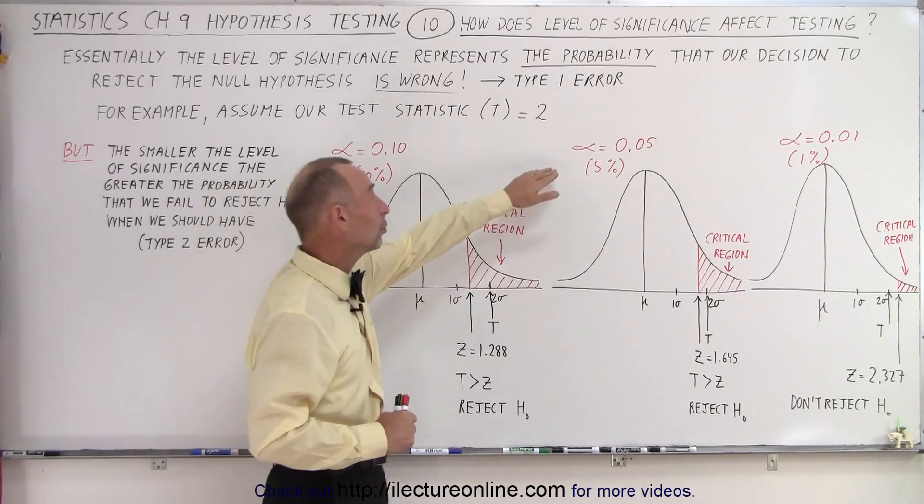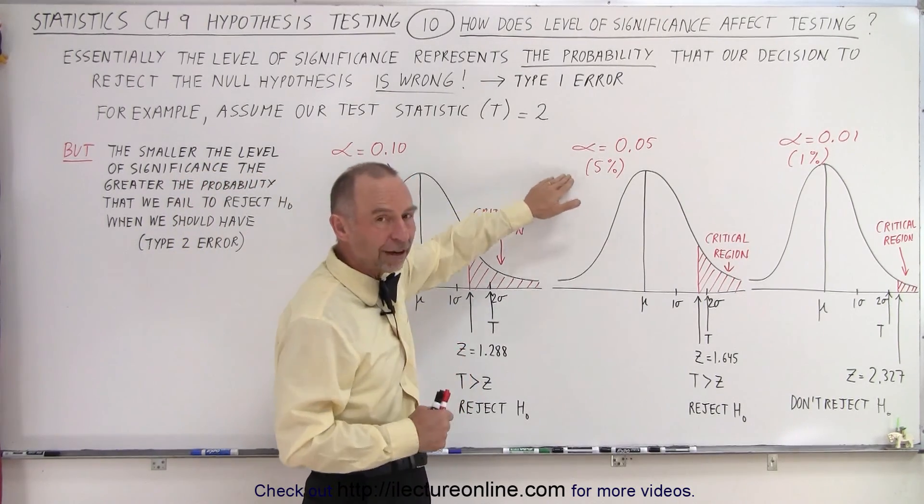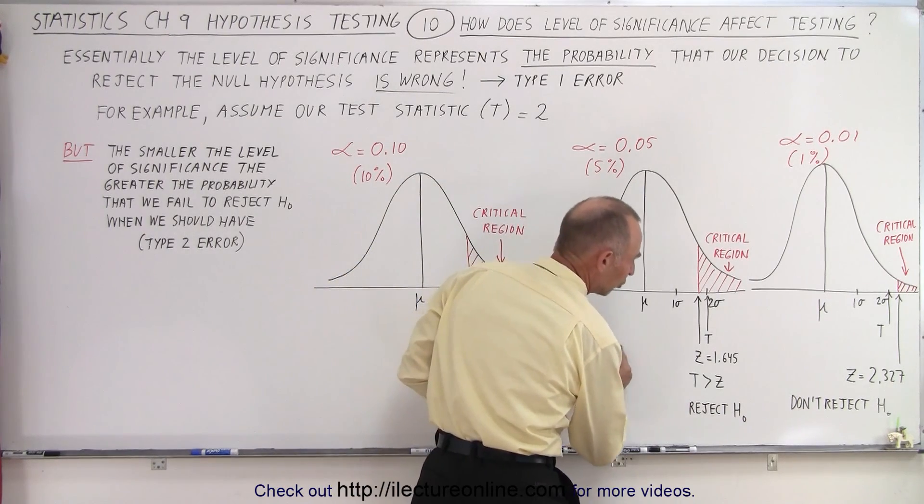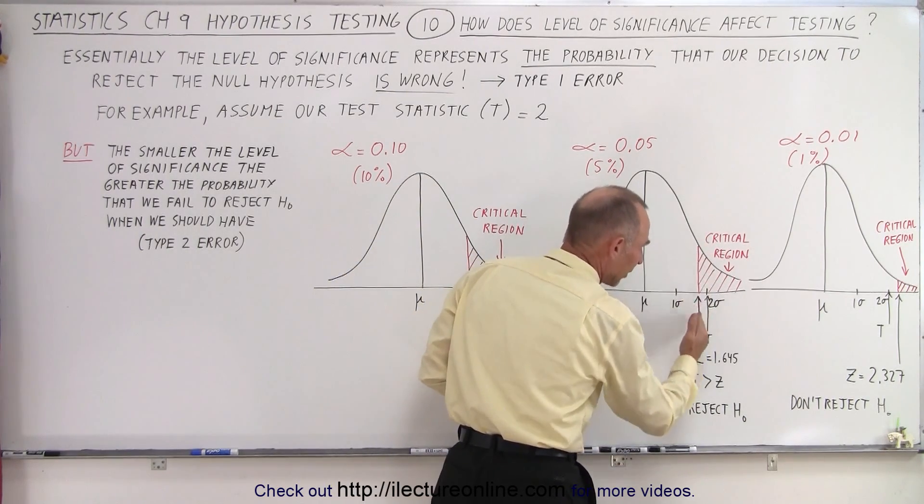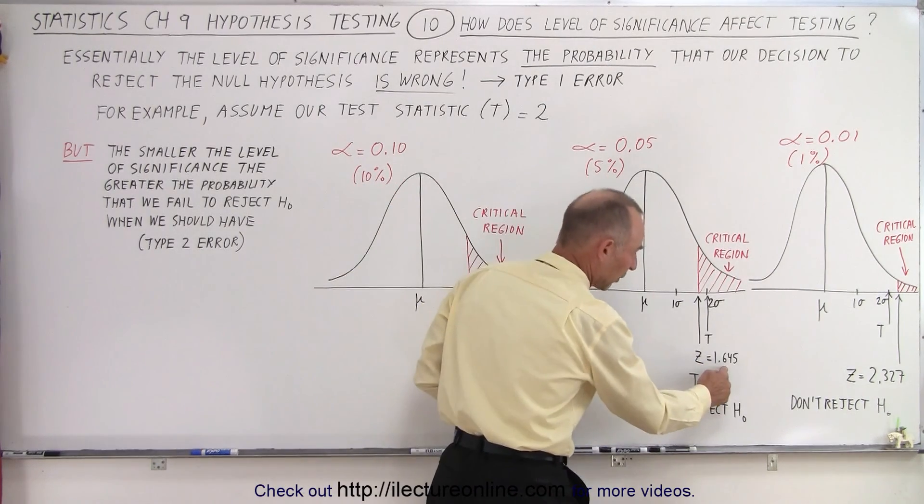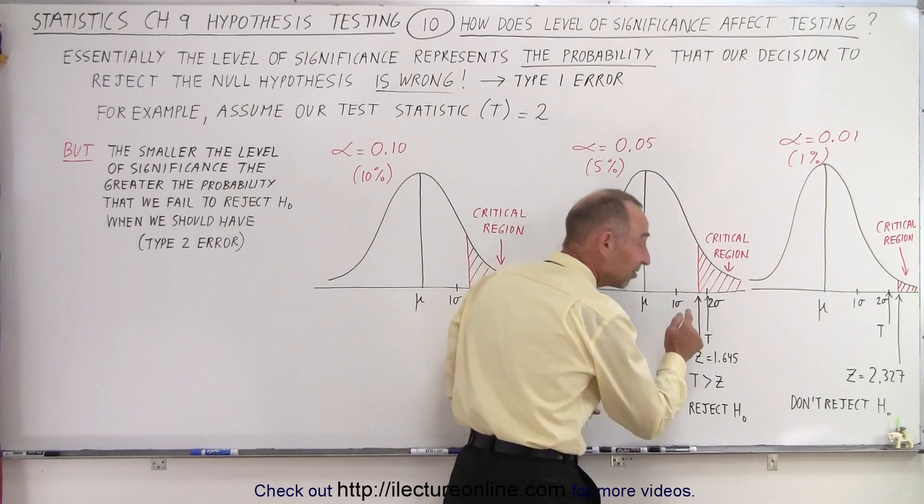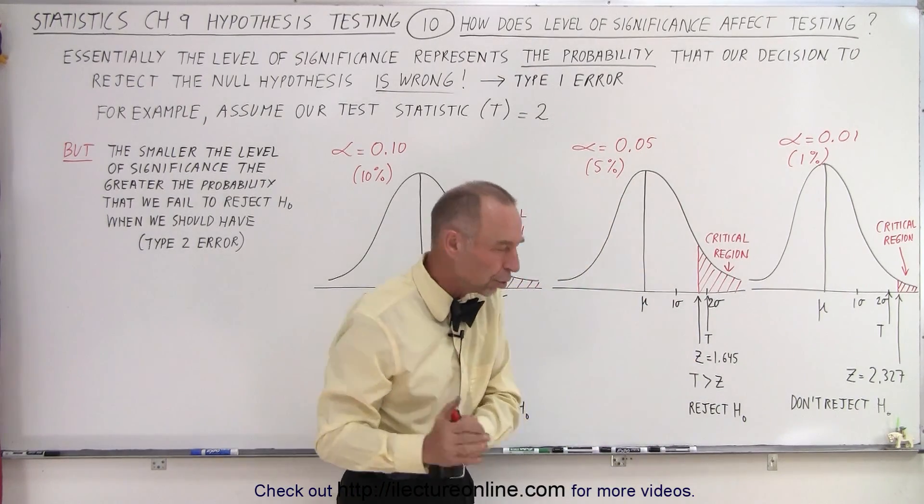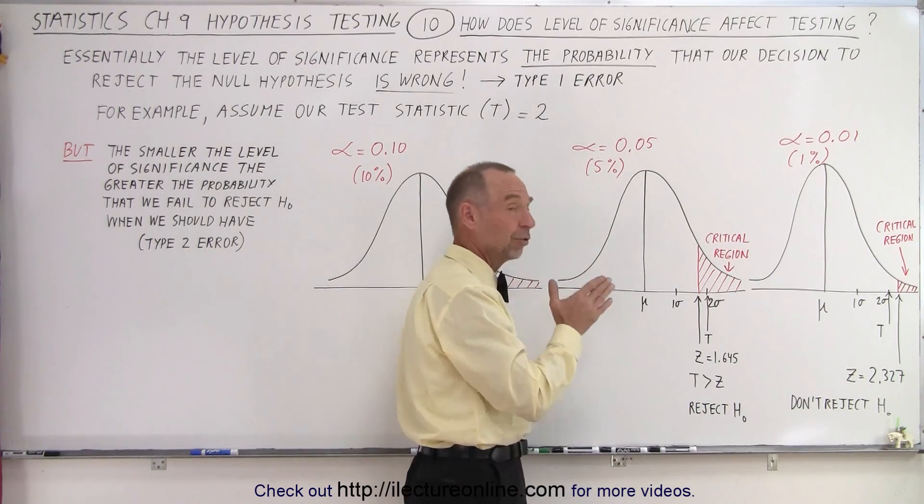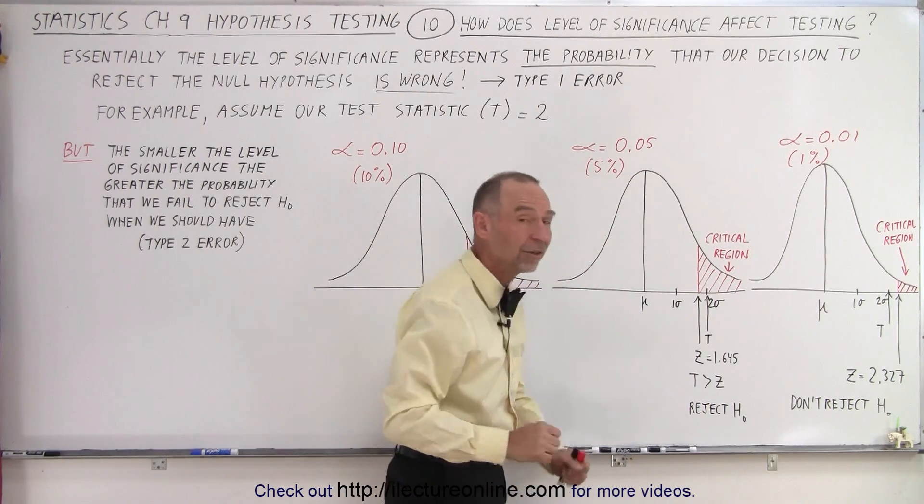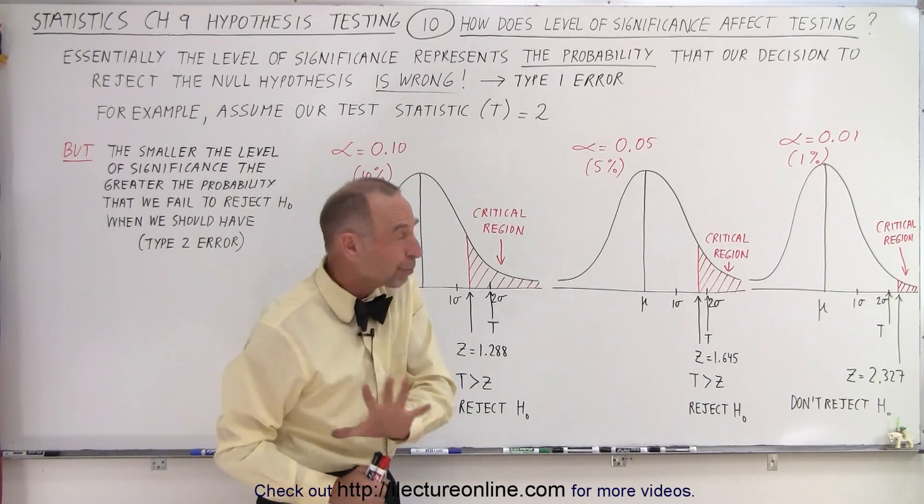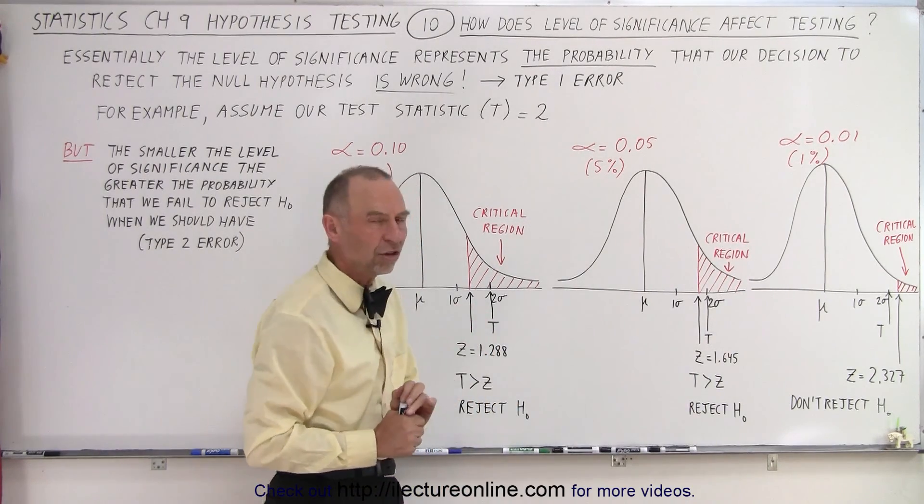So let's go to a level of significance of 0.05 or 5%. Notice that now our z-score at the beginning boundary of the critical region is now a bigger number, from 1.288 it's now grown to 1.645. But since T, our test statistic, equals 2, it still puts it in the critical region. Therefore, we're still going to reject our null hypothesis, and now there's only a 5% probability that that was the wrong decision.